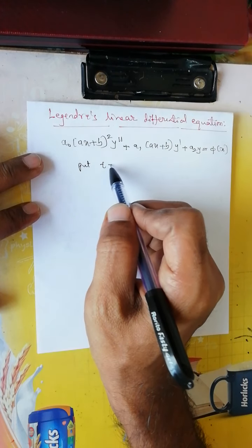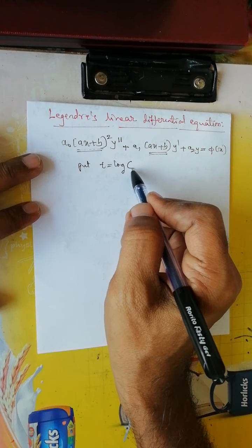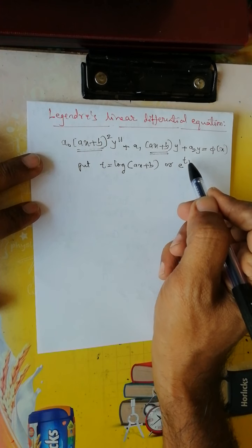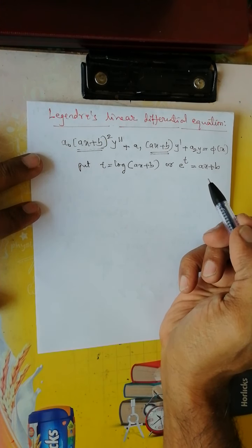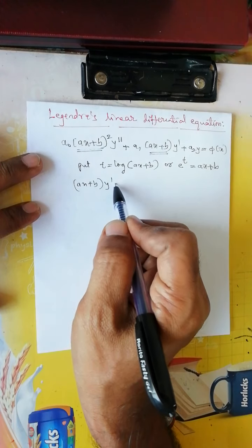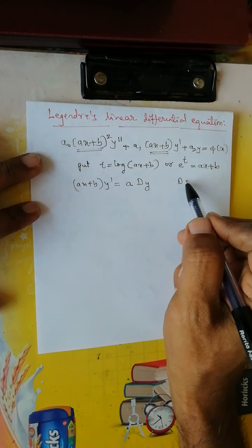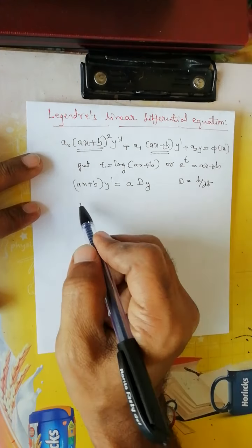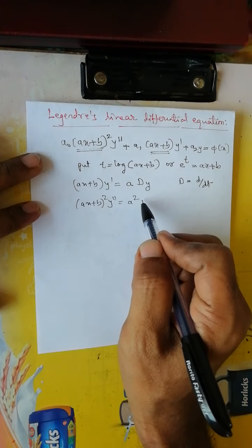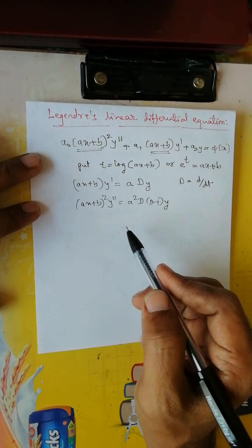Therefore, put t equals to logarithm of the bracket in each term, that is ax plus b. That is, t equals log(ax + b), or equivalently e^t equals ax plus b. After that, the substitution for (ax + b)y' will be A·Dy, where A is the coefficient and capital D means d/dt. The substitution for (ax + b)² y'' will be A²·D(D−1)y. These are the substitutions we take in Legendre's linear differential equation.